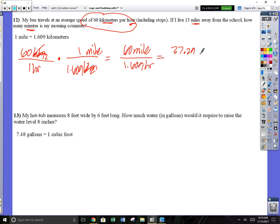Let's simplify this fraction. 60 divided by 1.609, and that is 37.29024 miles per one hour. That's the rate the bus is going, 37 miles an hour. He lives 13 miles away, which is less than 37, so his commute is probably going to be less than 1 hour.